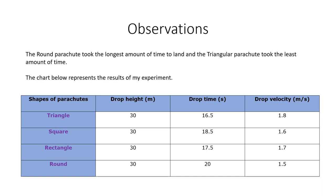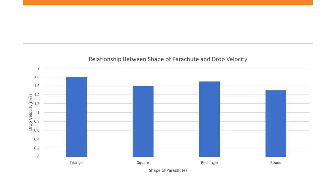This chart shows the result of my experiment. It shows, as you can see, that the round parachute took the longest time to land and the triangular parachute took the shortest one. You can also see that over here, that the drop velocity of the triangular parachute is high, which means it's descending at a faster rate.